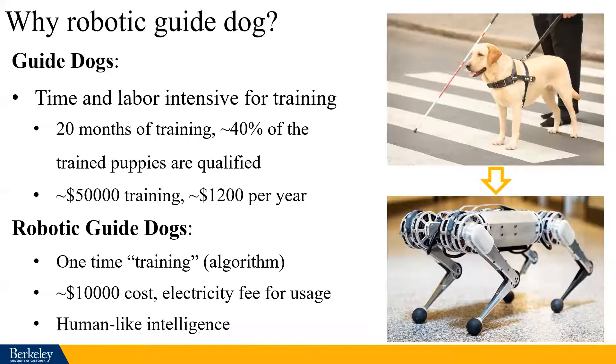Moreover, the biggest advantage of using a robot is that we can enable the robot with sorts of intelligence, such as safe navigation autonomy and speech communications, to better serve visually impaired persons.